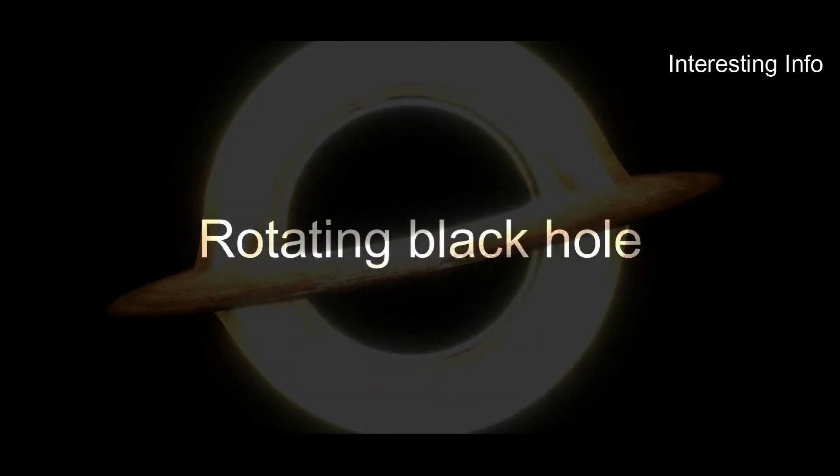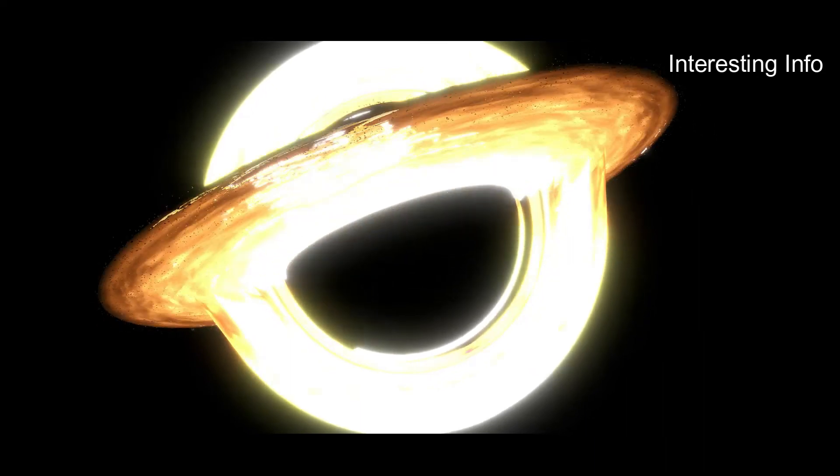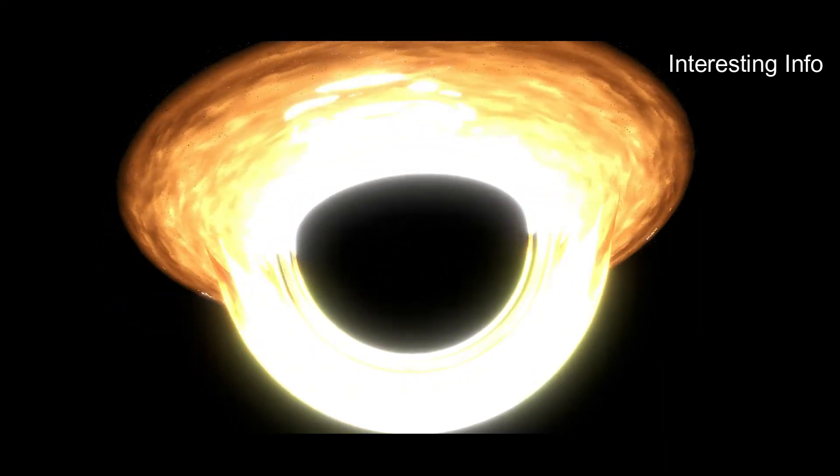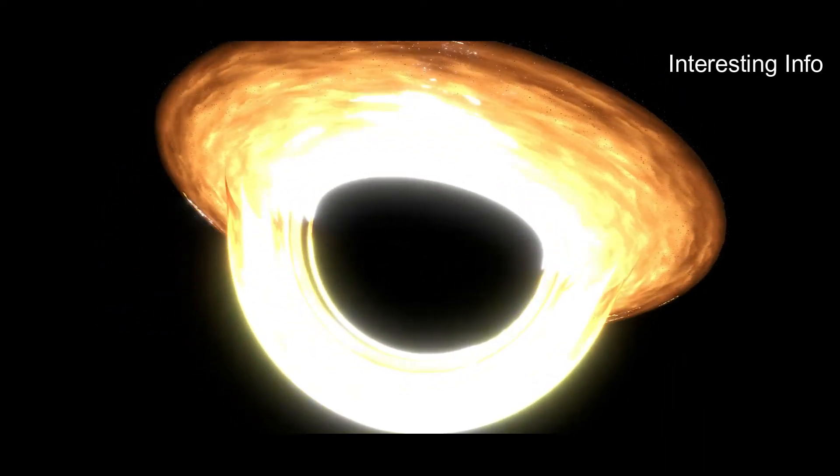Number 1: Rotating black hole. They are called rotating black holes because they have angular rotation. They revolve around their characters like the Earth and the Sun. In reality, all black holes are like this.